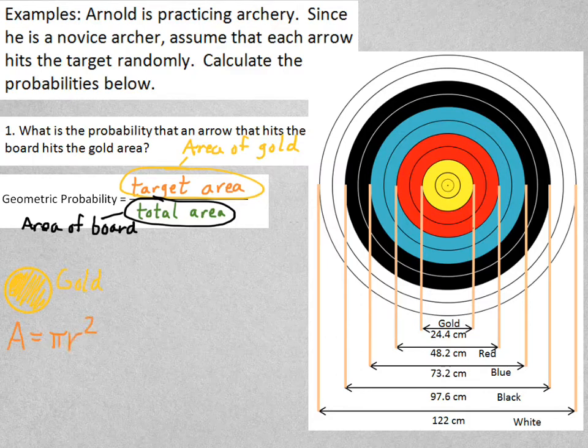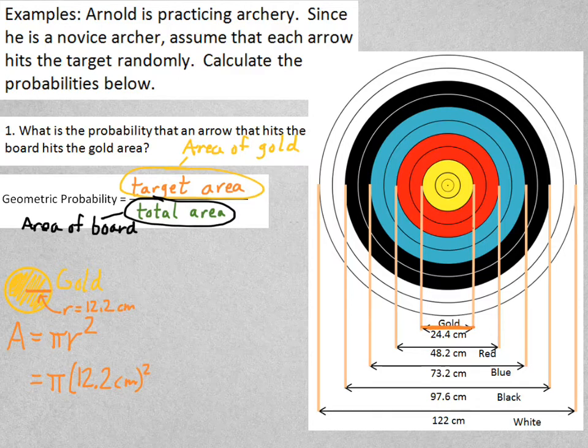The area of the gold circle would be given by pi r squared, because that's the area of a circle. The diameter of the gold region is 24.4 centimeters. So that means the radius is 12.2. So if I plug that into the formula, pi times 12.2 squared, that would give me 467.59 square centimeters. That's the area of the gold region.